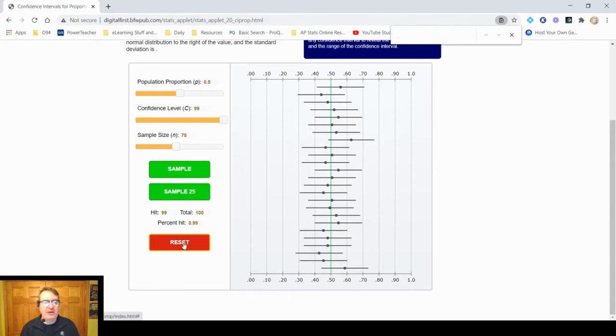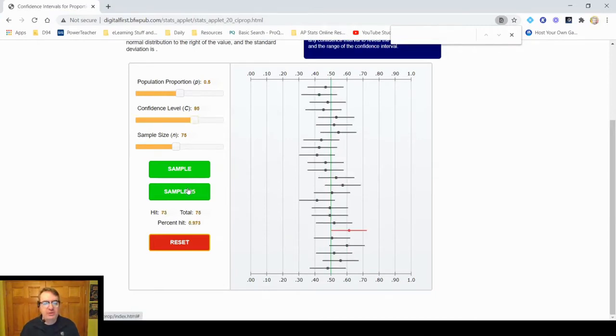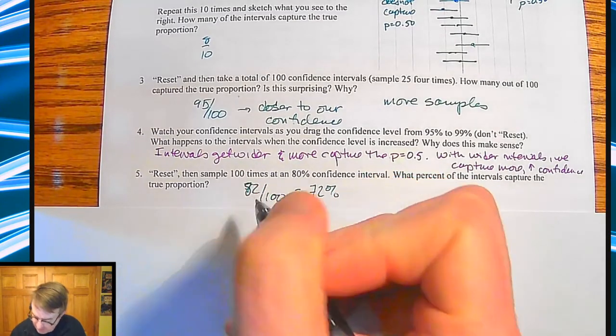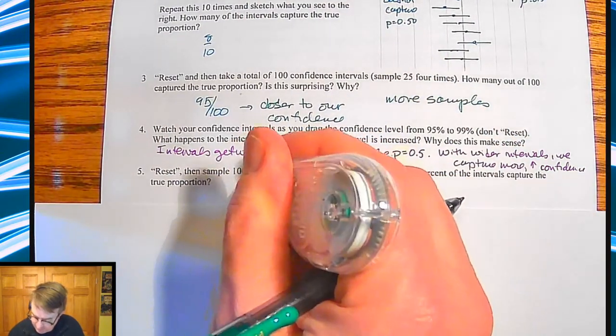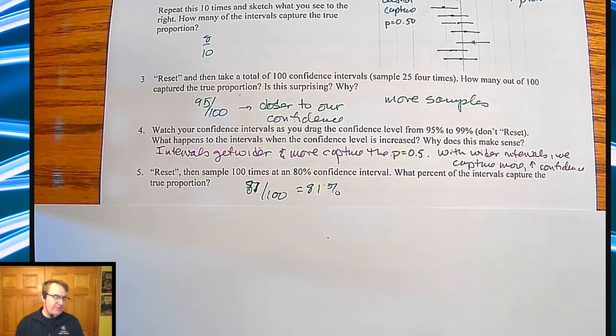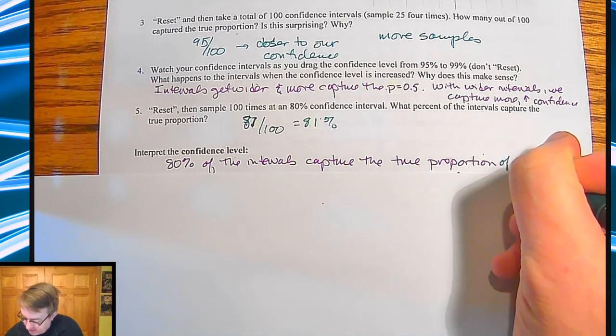So we are going to now reset and we're going to hit 80% confident. You're going to do a hundred of those. So I did a hundred of those and I got 81%, which is actually better than the one I got before, before I screwed everything up. So I got 81%. So that was actually better than the 72 that I had before. So what percent captures the true proportion? 81% of these capture the true proportion.